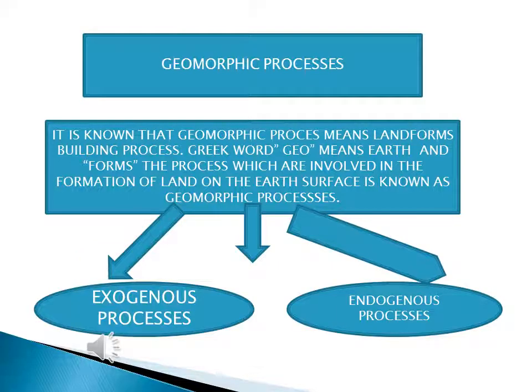First of all we have to know what do you mean by Geomorphic Processes. The Geomorphic Processes means Landform Building Process. The Greek word Geo means Earth and Morph means Forms. So the processes which are involved in the formation of land on the Earth's surface are known as Geomorphic Processes.